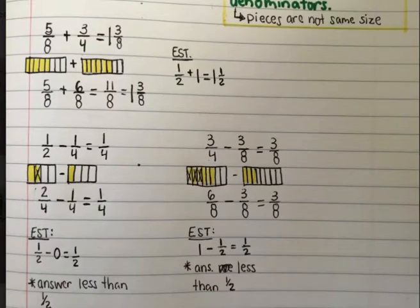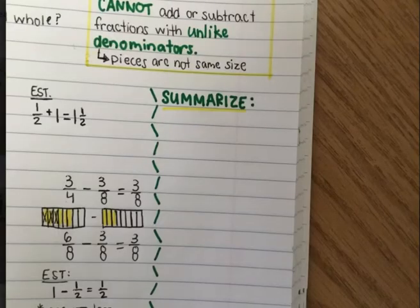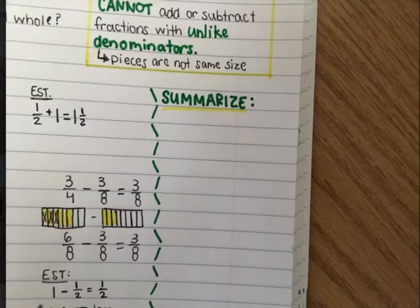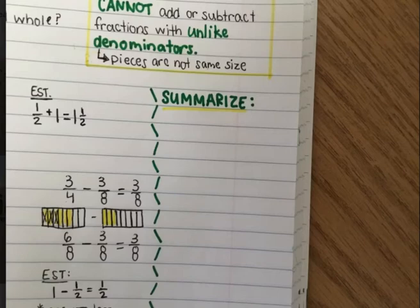Fantastic job. So last thing before you finish, I would like you, just in the margin or off on the side, somewhere on your page, to quick-write and summarize in your own words what you need to do in order to add and subtract fractions with unlike denominators. Thank you for taking the time to take all your notes and to summarize. If you haven't finished jotting your information down yet, you can do that after the video ends. Don't forget to complete the two practice problems, and have a great day. If you have questions, please let me know — we'll see you next time. Bye.